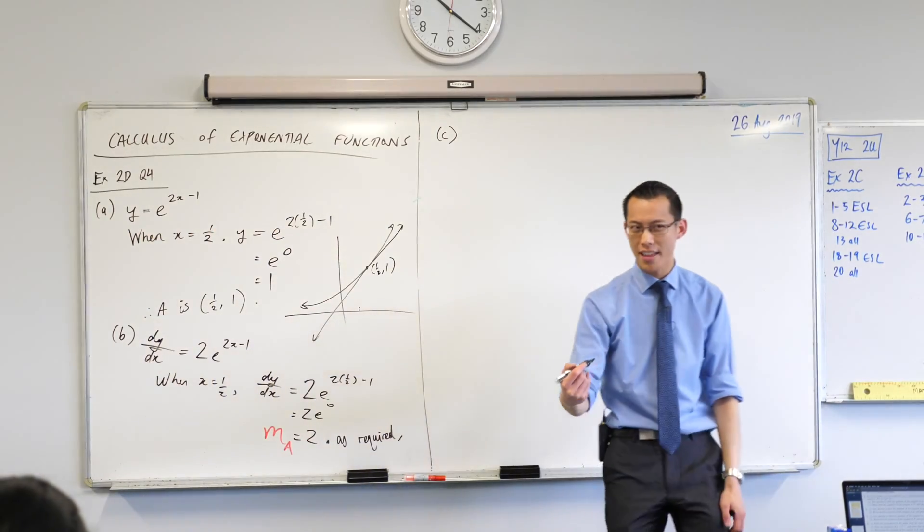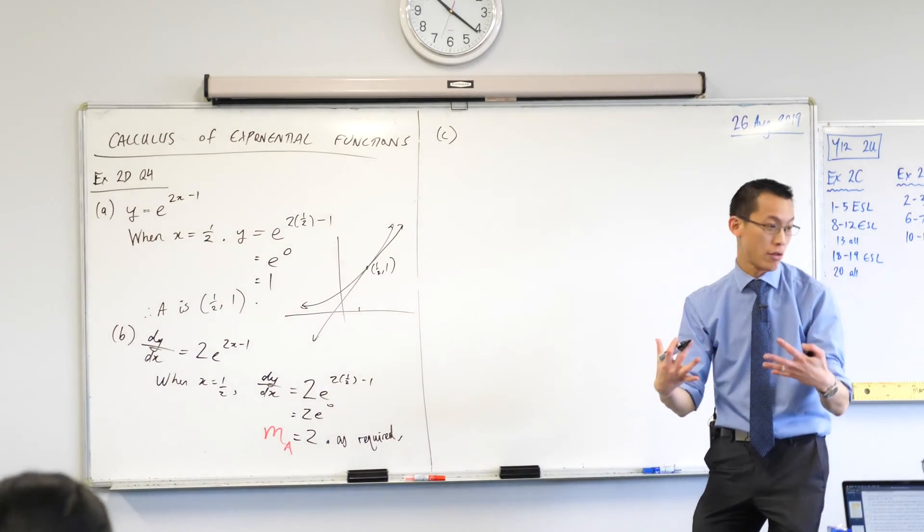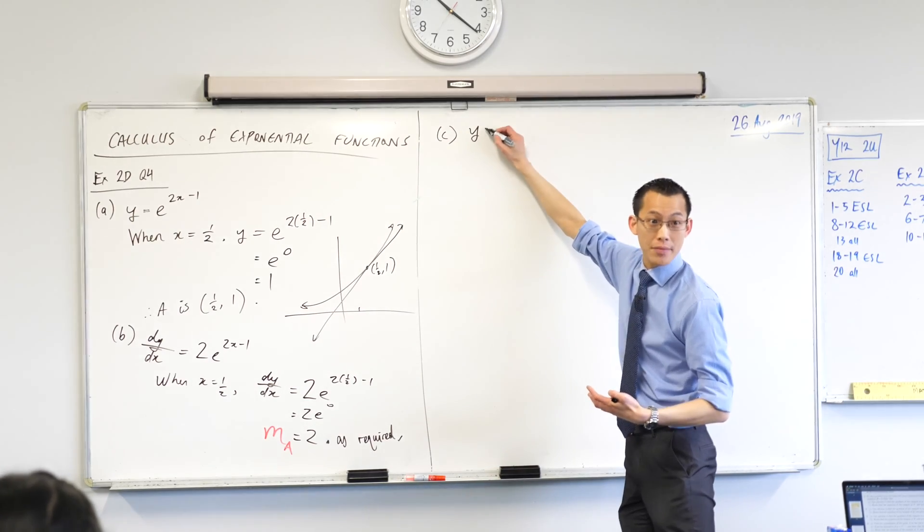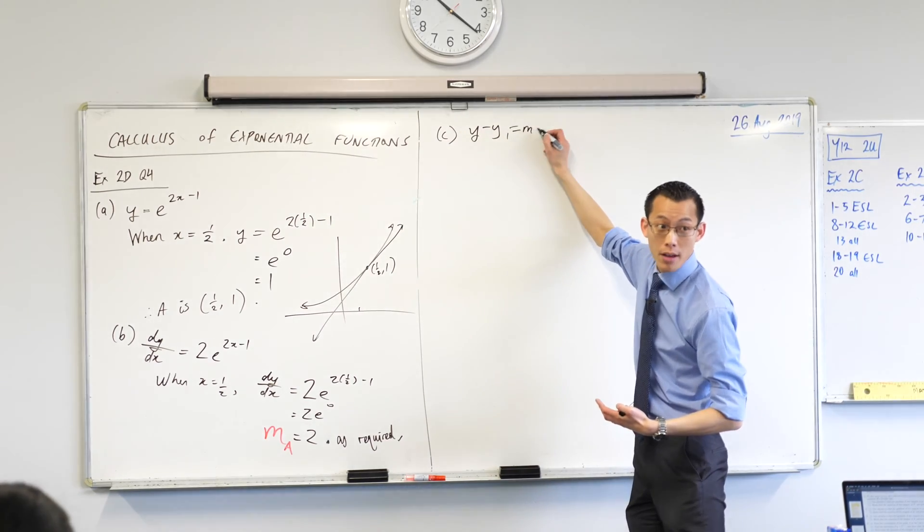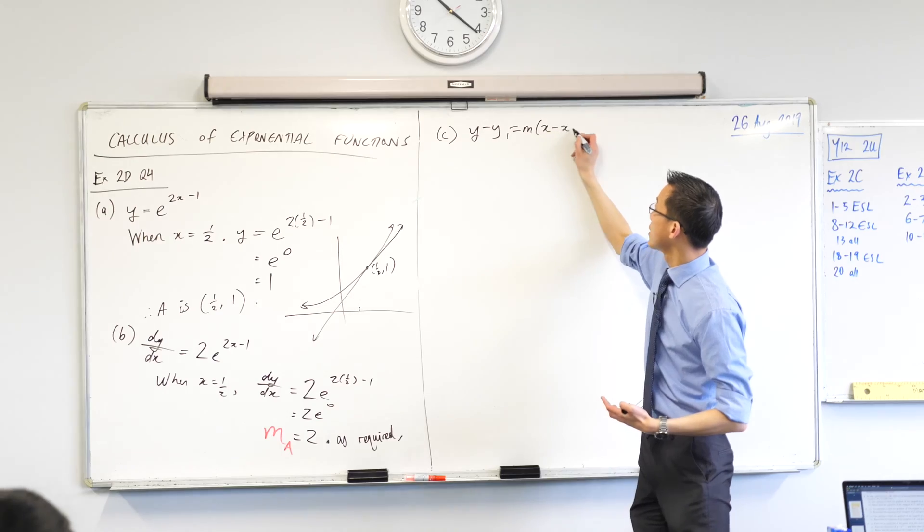Can we recite together what point gradient form of a straight line is? I'll give you a clue. It starts with a Y. Y minus Y1. Very good. M? X minus X1. X minus X1. Fantastic. So there's point gradient form.